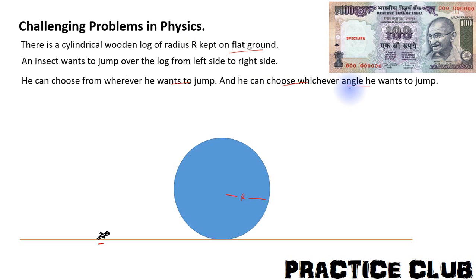He can jump at whatever angle he wants such that he is able to cross this wooden log from left side to right side. The question is, find the minimum velocity at which he shall jump such that he is able to cross the wooden log.